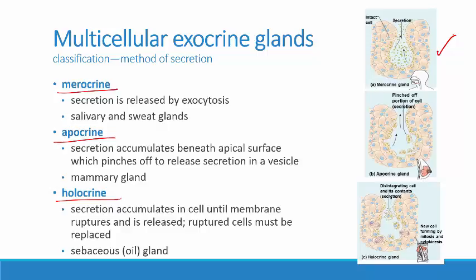With apocrine secretion, the secretions accumulate just underneath the apical surface — they can be in vesicles that collect right beneath the apical surface. When the body signals secretion release, the upper surface of the cell pinches off, and a small package containing all these secretions is released into the duct. This is how mammary glands release milk into their ducts. Think of it this way: the apical portion of the cell pinches off — that's apocrine.